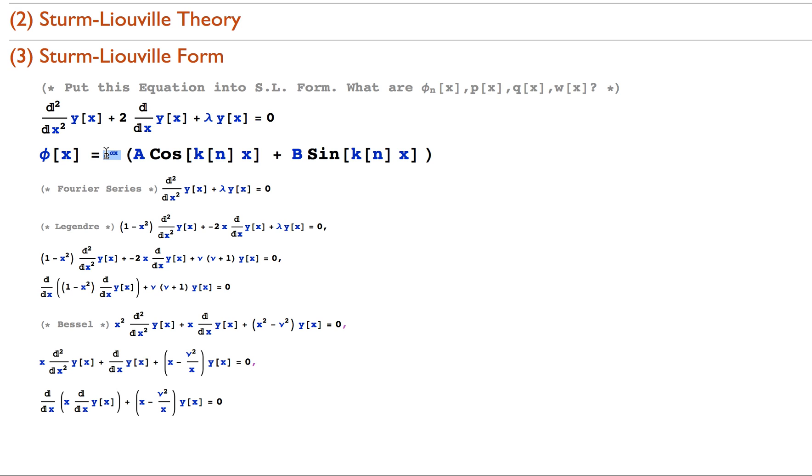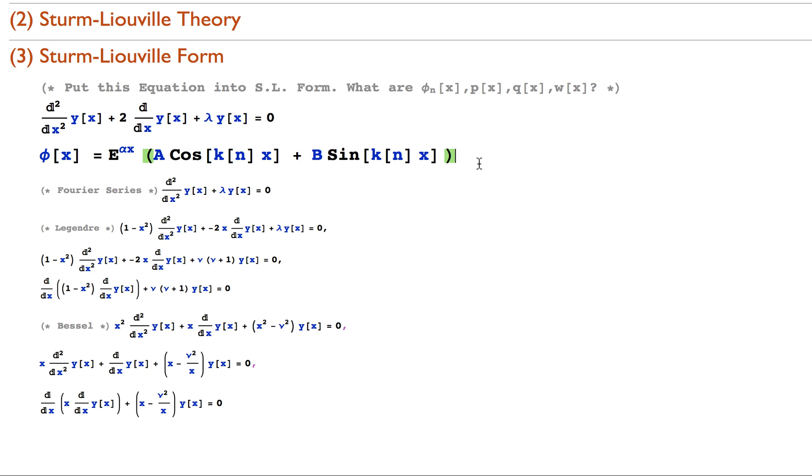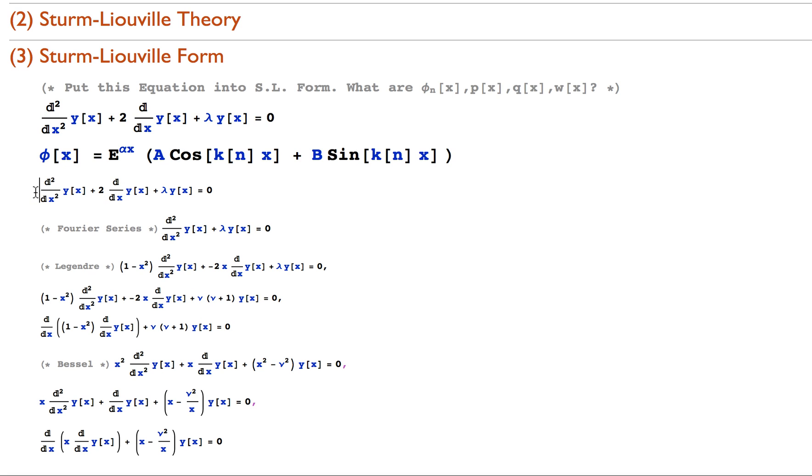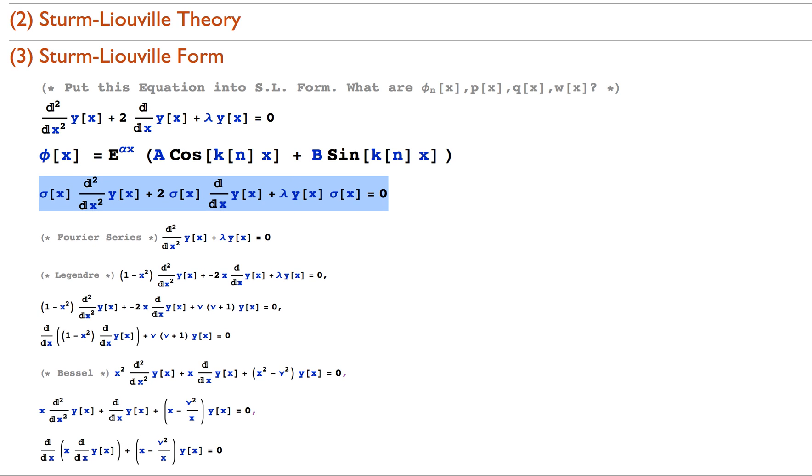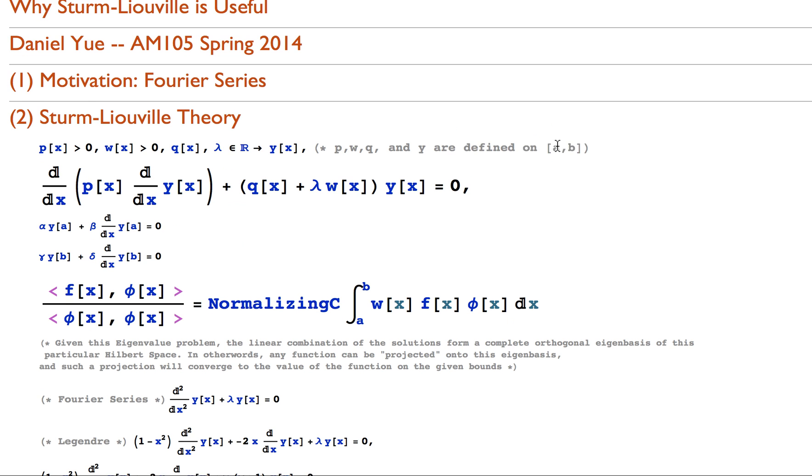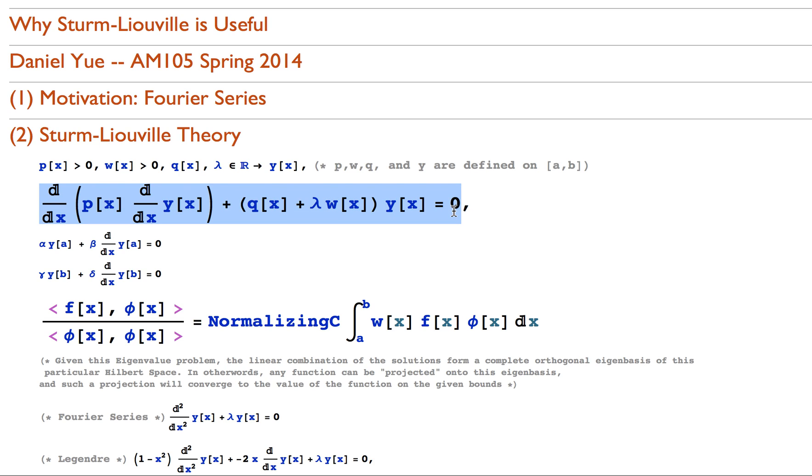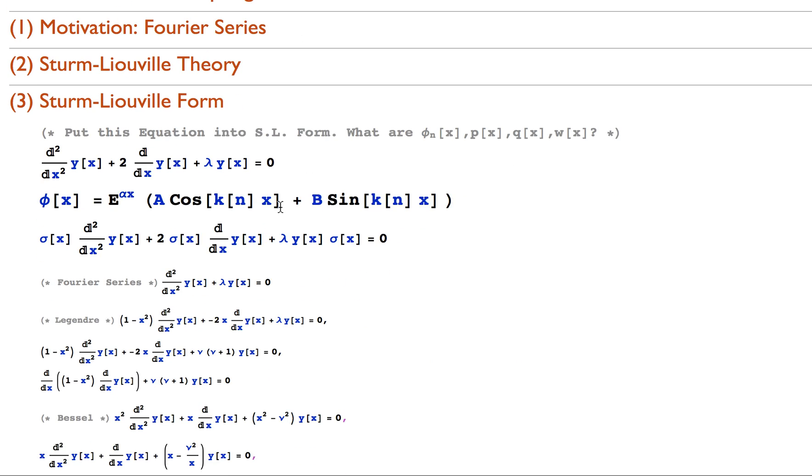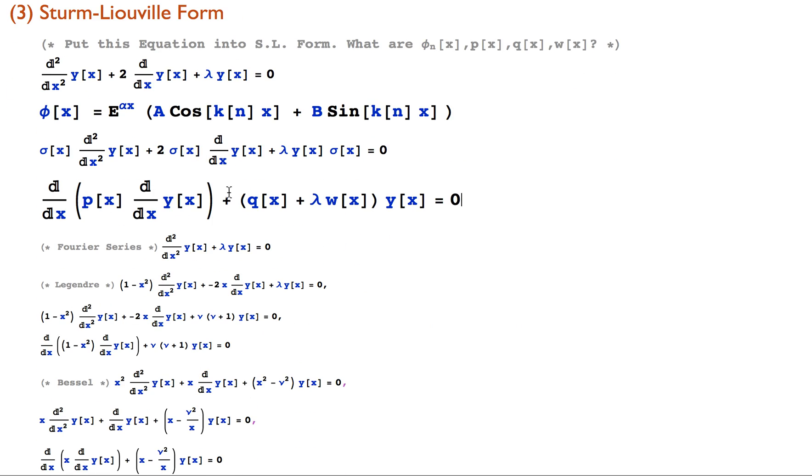If we want to find p, q, and w, what we simply do is we take this equation from before, and we multiply it by sigma of x. Sigma of x is just some arbitrary function that we don't know, but what we're doing here is we're trying to massage our solution into some form that we can recognize. All I've done in this statement is I've multiplied both sides by sigma of x, 0 times sigma of x is still 0. Now, we can clearly see that if we're supposed to satisfy Sturm-Liouville form from above.